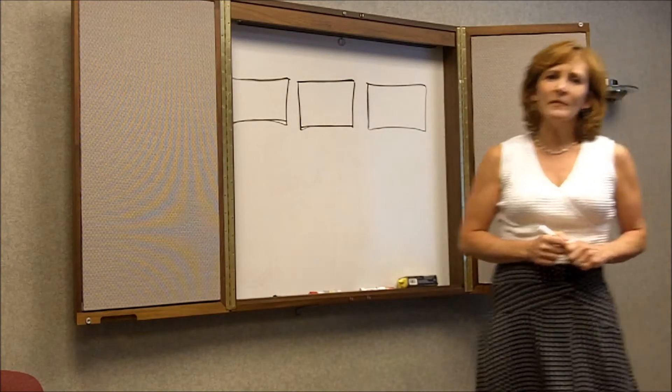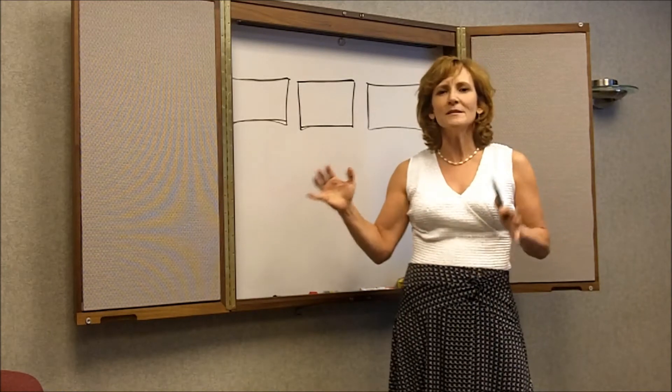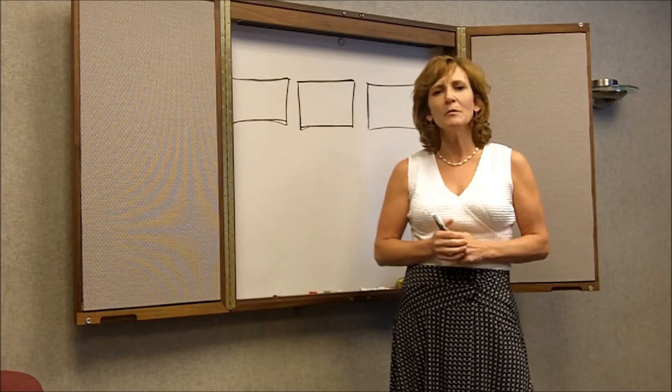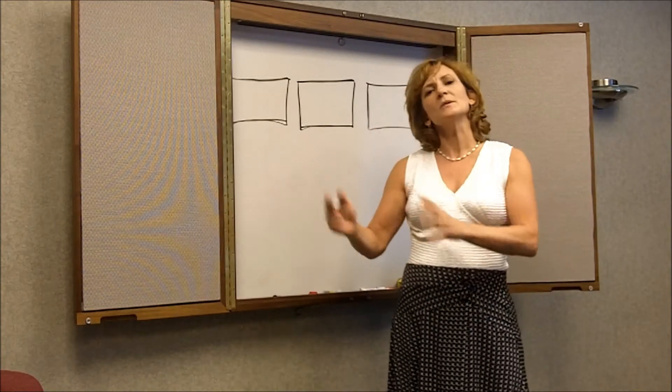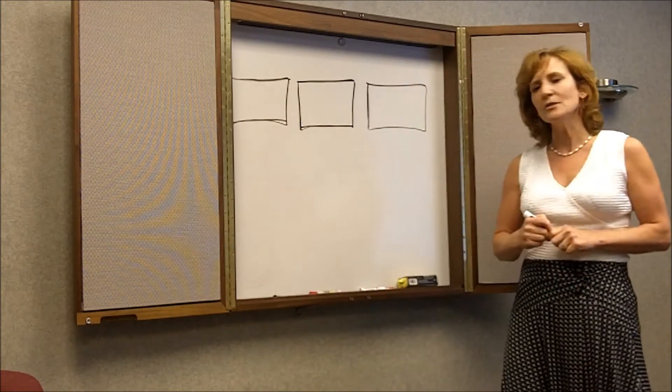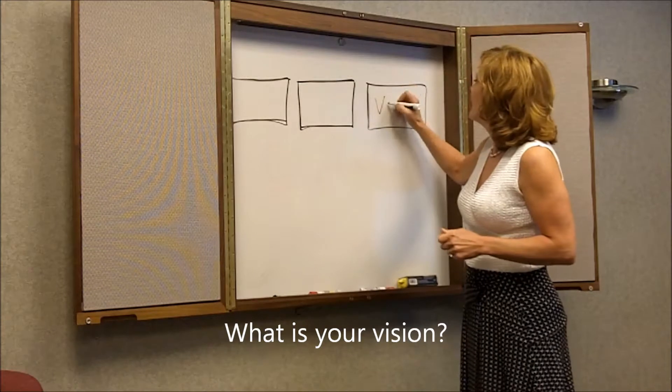Many of us have been taught that things should go in order, 1, 2, 3, A, B, C. Well, the planning process simply can't work that way, because what we need to know is what is it that we want? What is that end result that we're looking for? So what we need to do is we need to start with the end in mind, and I refer to this as the vision.